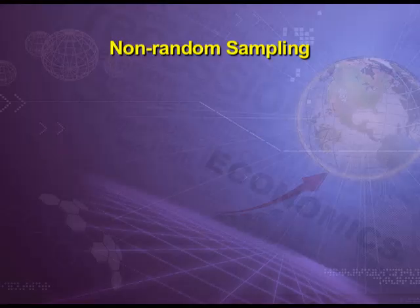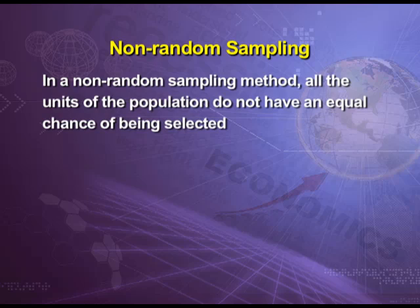Now we talk about non-random sampling. In this case, judgment is used in selecting the sample — selecting items is not done randomly. Non-random sampling means a method in which all units of the population do not have an equal chance of being selected. The convenience and judgment of the investigator plays a very important role. Samples may be selected on the basis of judgment, purpose, convenience, or quota.